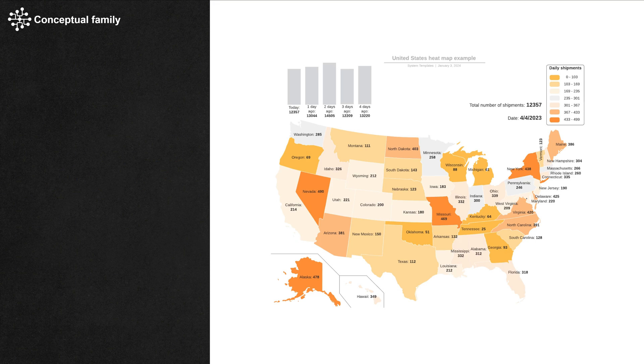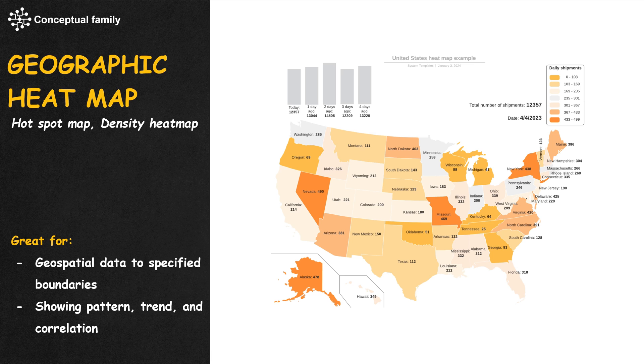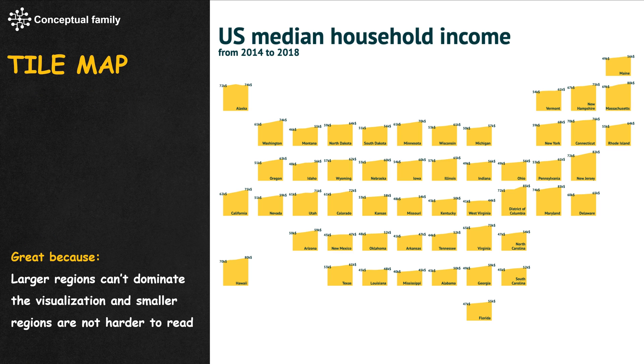When a heat map is applied to a real map, we have the geographic heat map. A tile map is a real geography map but with huge pixels — also known as tiles. Each tile is equal in size and can come with different colors or text.